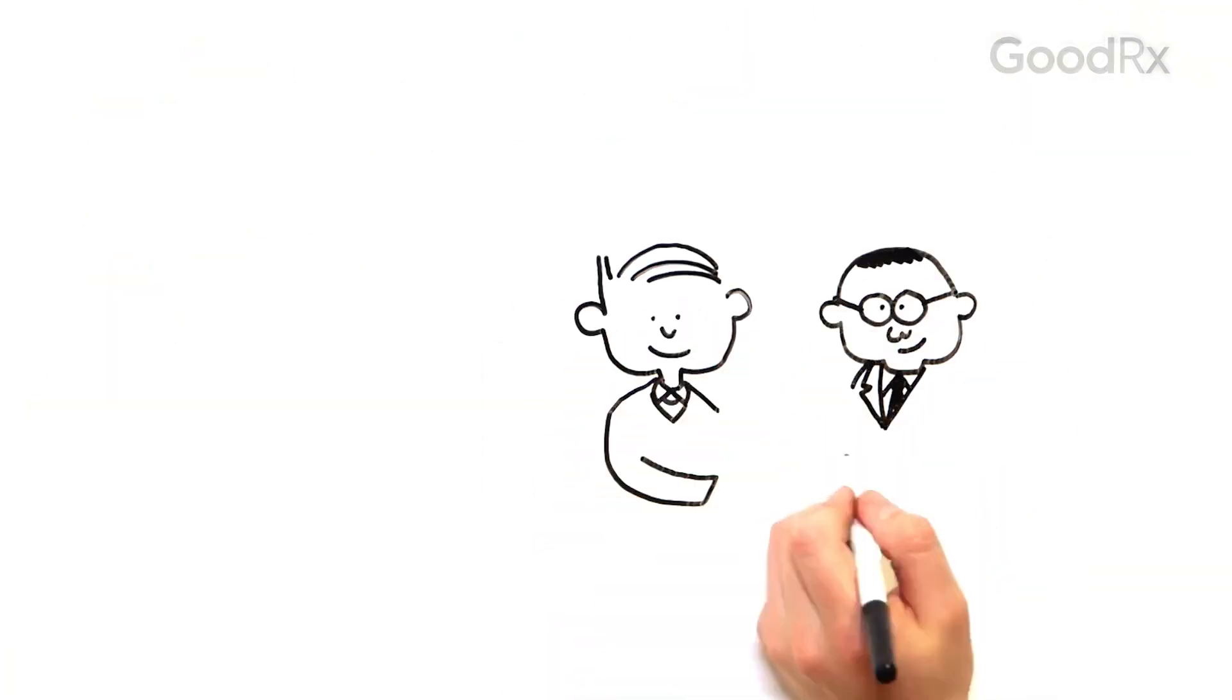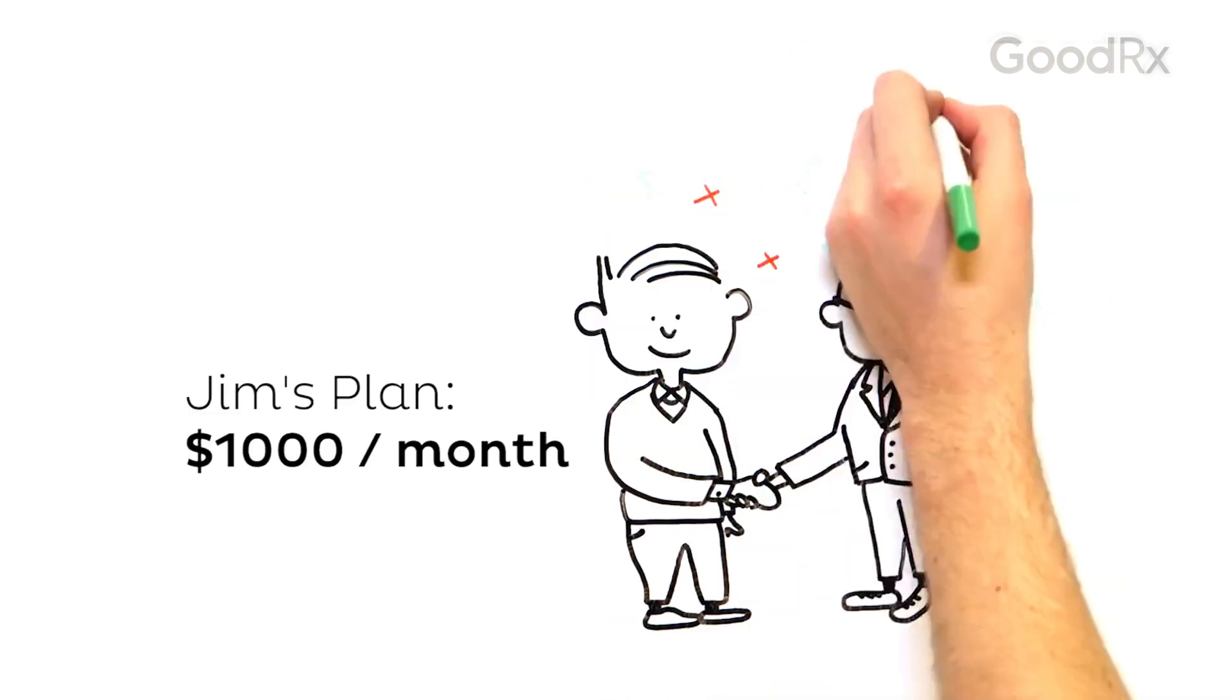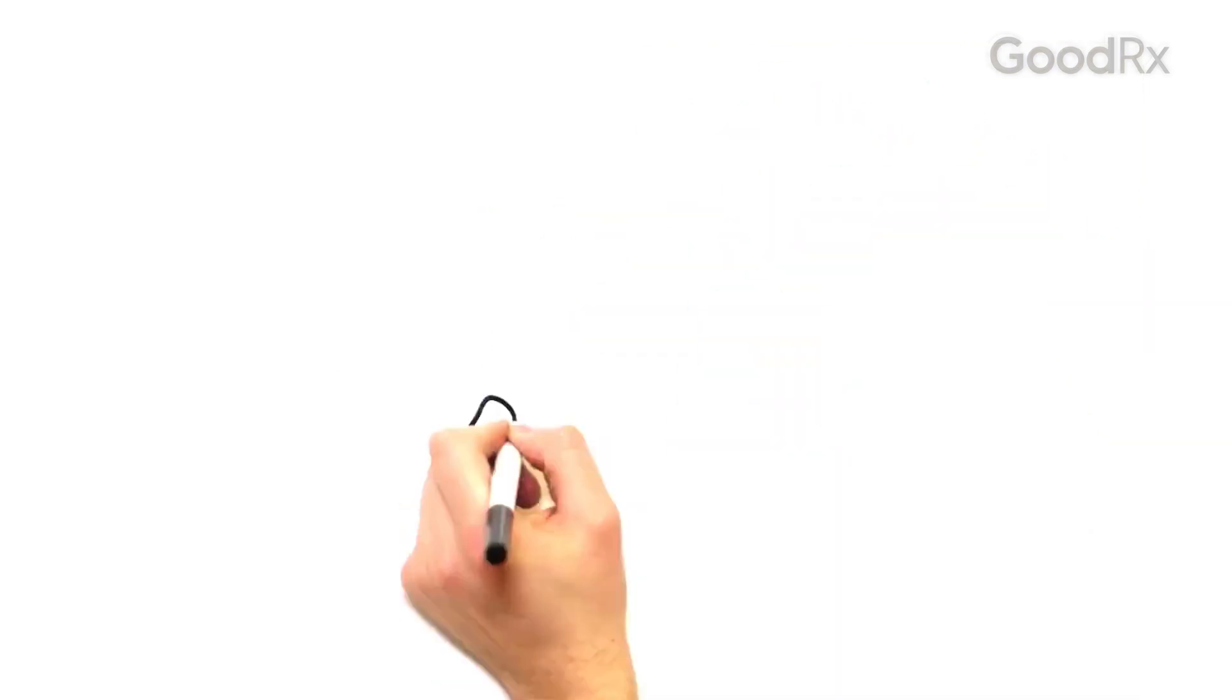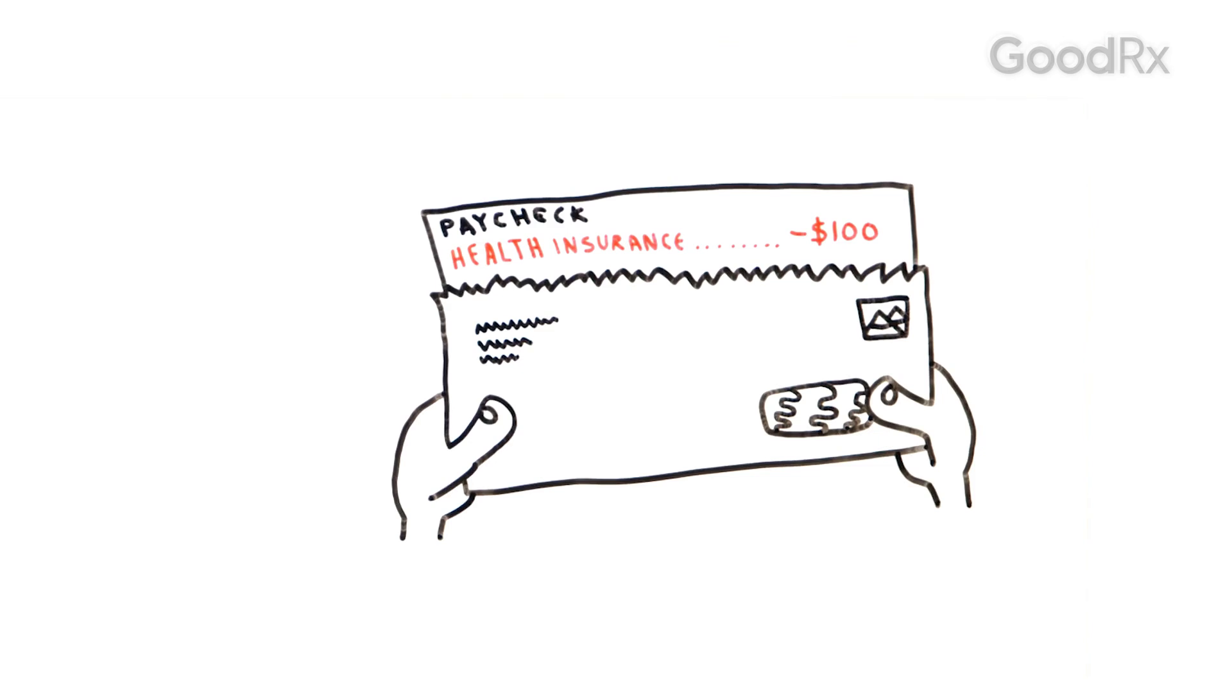Jim signed up for a good health insurance plan when he was hired. His plan costs $1,000 a month. Jim's employer actually covers most of the cost. But every week, $100 is deducted from his paycheck to pay his portion of the cost.